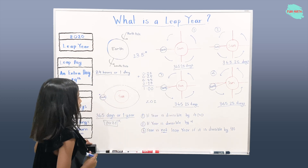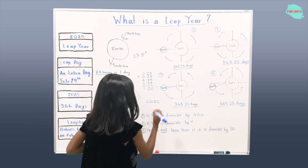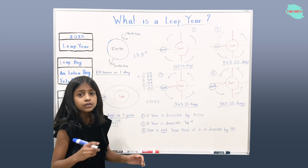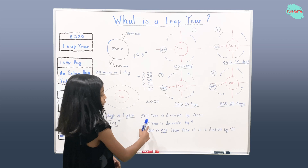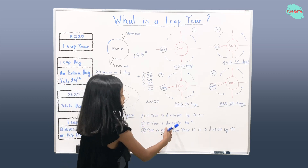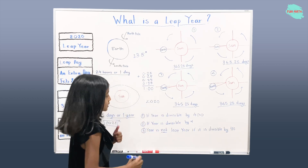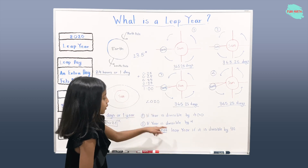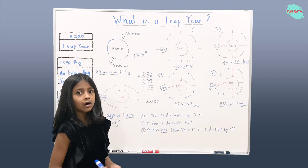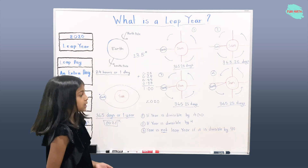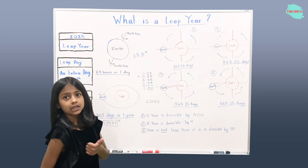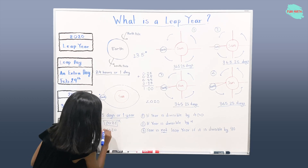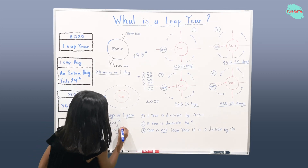Now let's take 2020. Is 2020 divisible by 400? No. Is 2020 divisible by 4? Yes. Is 2020 divisible by 100? No. So that means 2020 is a leap year.